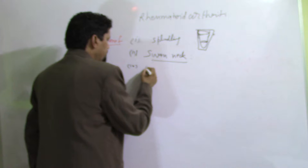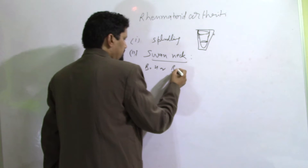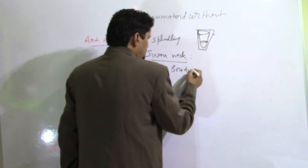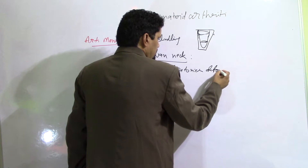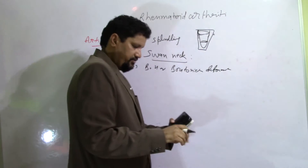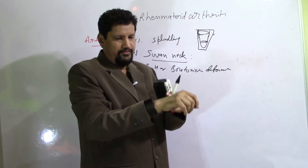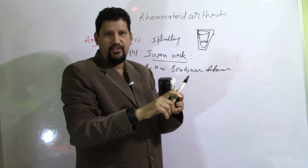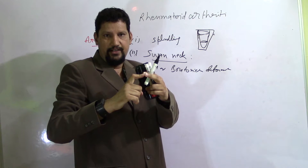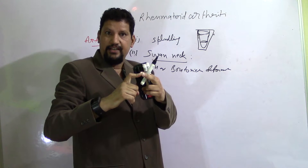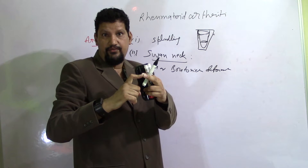The third deformity is called boutonnière — or buttonhole — deformity. In this deformity, there is flexion of the proximal interphalangeal joint and extension of the distal interphalangeal joint.